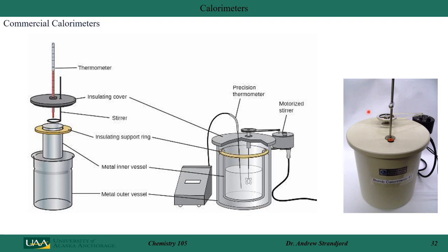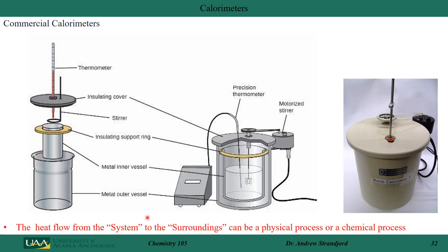There is a very special calorimeter called a bomb calorimeter, used for measuring the amount of energy in food products. Heat flow from a system to the surroundings can be a physical process — like dropping a chunk of metal into a calorimeter — or a chemical process, such as mixing two chemicals and measuring the change in temperature, which tells you the amount of energy that flowed into or out of the system.